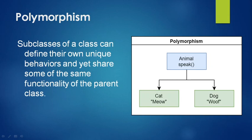In polymorphism, the actual dictionary definition refers to a principle in biology in which an organism or species can have many different forms or stages. This principle can also be applied to object-oriented programming and languages such as Java. So in polymorphism, subclasses of a class can define their own unique behaviors and yet still share the state and some of the other behaviors of the parent functionality.